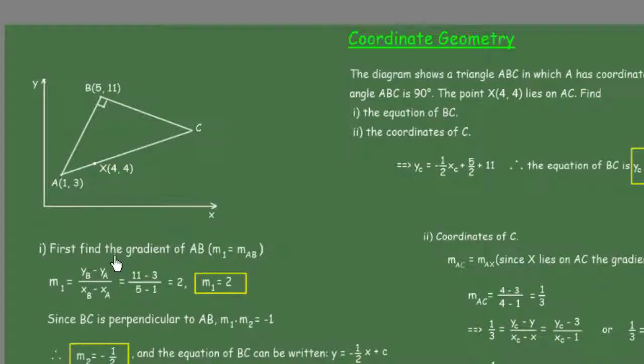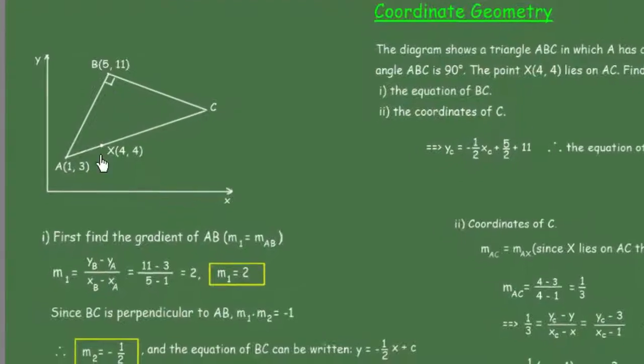First of all, we will find the gradient of AB, m₁ or m_AB. m₁ equals the difference between the Y values of B and A over the X values of B and A. We have (11 - 3)/(5 - 1), and that's going to give us 2. The gradient of line AB is 2.